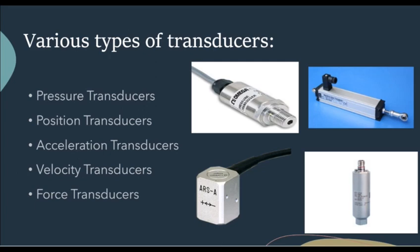Acceleration transducers are used to detect movements or changes in acceleration, enabling features such as fall detection in smart security systems or adjusting settings based on the movement of wearable devices. Velocity transducers can be used for monitoring the speed of moving objects or components, enabling speed-based applications. Force transducers measure forces exerted on objects, enabling applications such as smart weighing scales and robotic grippers for precise monitoring of mechanical interactions within the household.